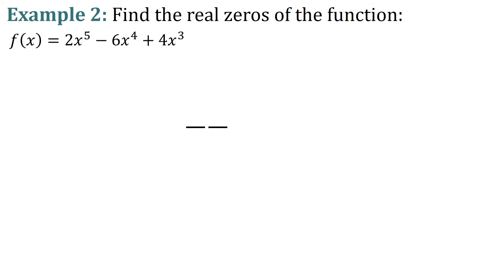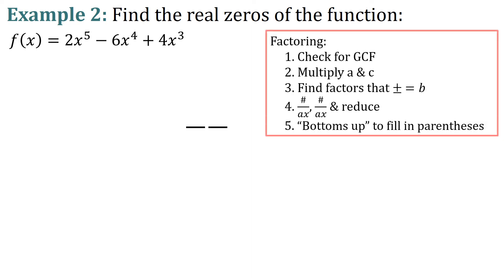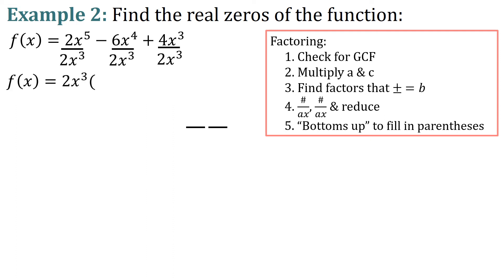Let's find the real zeros of f of x equals 2x to the fifth minus 6x to the fourth plus 4x cubed. We need to factor this. The first step is to check for a GCF. We have 2x to the fifth minus 6x to the fourth plus 4x cubed. We do have a GCF: 2x cubed. So we can divide all three terms by 2x cubed, factoring it out to get f of x equals 2x cubed times the trinomial in parentheses.